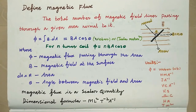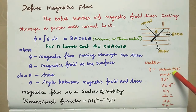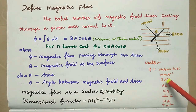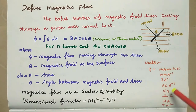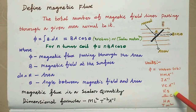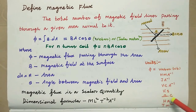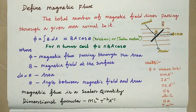Various units of magnetic flux: Weber, Newton meter per ampere, Joule per ampere, Volt Coulomb per ampere, Volt second, Ohm into Coulomb, Henry ampere, and Tesla meter square.